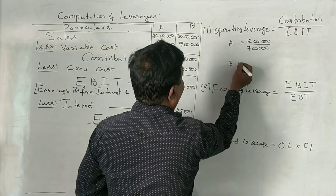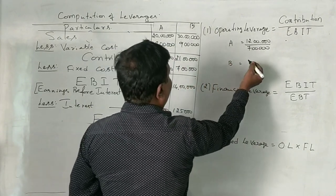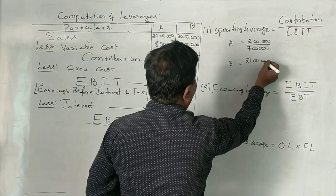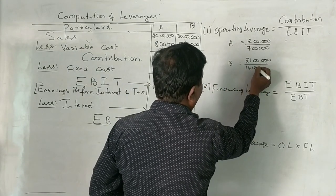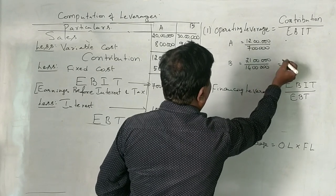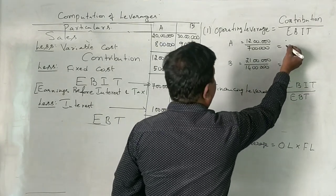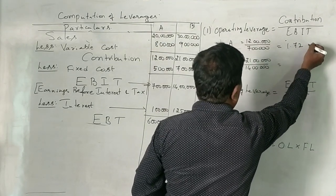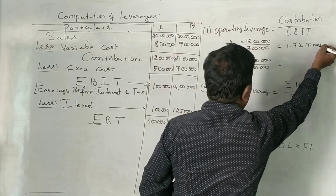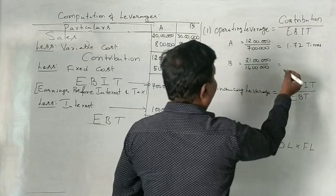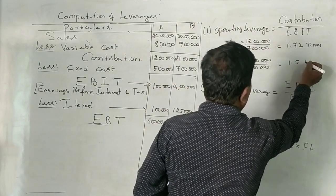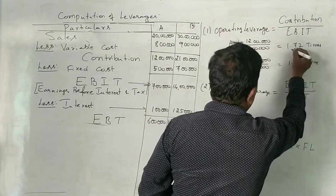And firm B will be 21 lakhs is the contribution for firm B and EBIT is 14 lakhs. Tell me the answer. 1.72, sir. This is 1.72 times. Then? 1.5, sir. 1.5 times.